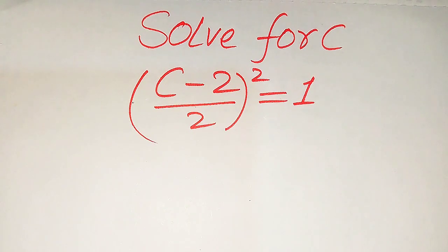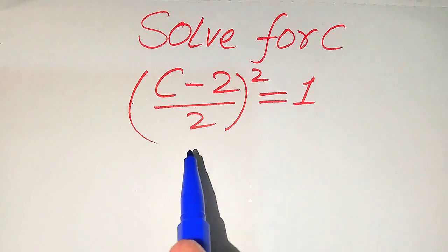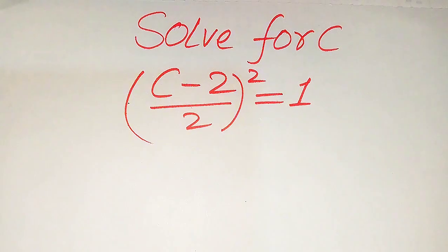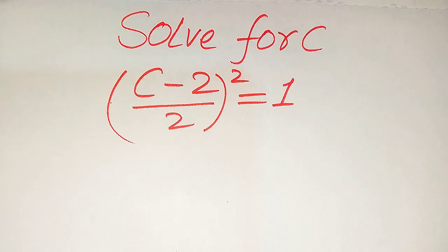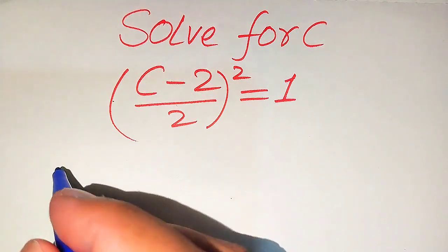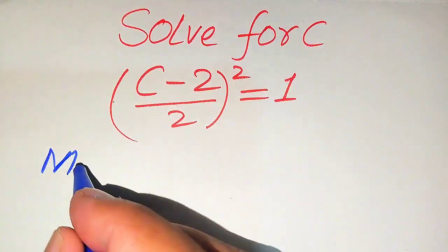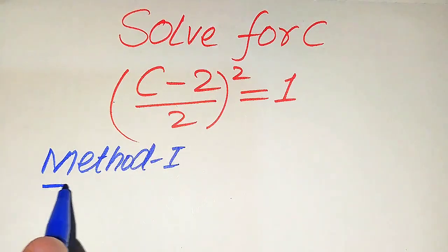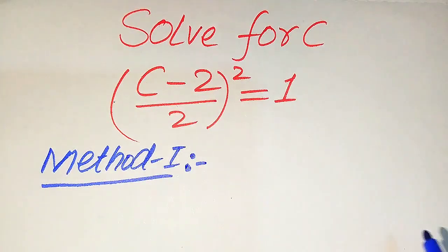Hello everyone. How to solve this problem for the values of c, if we have (c minus 2) divided by 2, whole square, equals 1. We solve this problem for all the values of c. First we find all the roots of this equation, and at the last we will verify which of the roots are solutions and which are extraneous roots. We solve this problem using two methods.